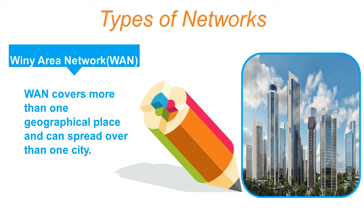Wide Area Network (WAN): WAN covers more than one geographical place and can spread over more than one city. For example, if a network covers one city or more, that is WAN. So: TAN is one room, LAN is one building or more in a small area, and WAN covers more than one geographical place and can spread over more than one city.